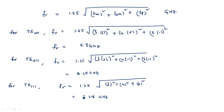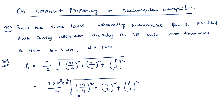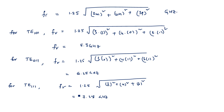These are the three lowest resonating frequencies for this rectangular cavity resonator: 5.3 GHz, 6.25 GHz, and 7.28 GHz. This is how you solve problems on resonating frequency of a rectangular waveguide cavity or the dominant mode in a circular waveguide. Thank you.